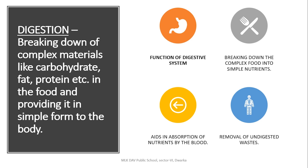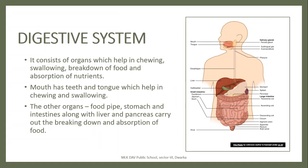First, the digestive system breaks down the food. Then it helps the broken-down nutrients to get into the blood. But it also removes the unwanted, undigested material. Now, what is the digestive system made of? It is made of many organs. One or two organs can be seen from outside — that is the mouth, teeth, and tongue.